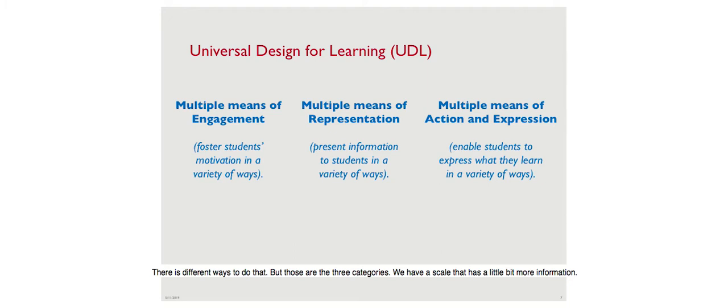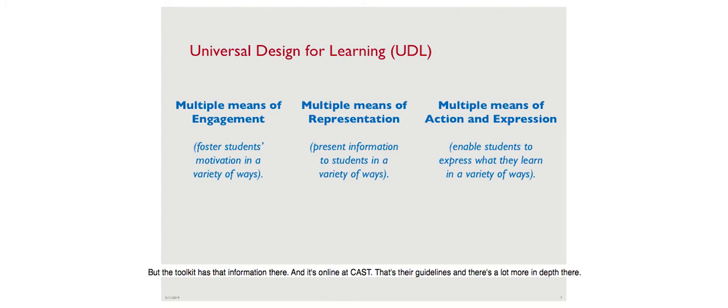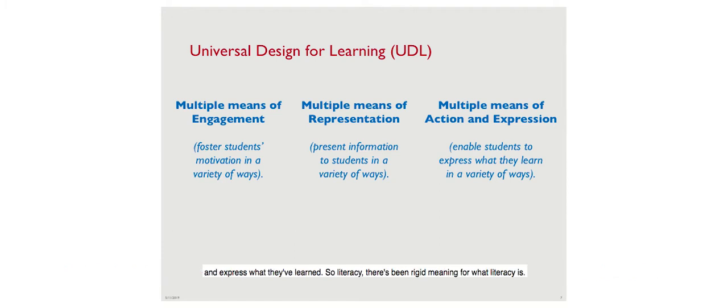There's actually a scale with nine categories that goes more in depth, available online at CAST. The big picture of UDL is that it's a framework for understanding what different students need to make learning effective and inclusive, ensuring all of them can learn and express what they've learned.